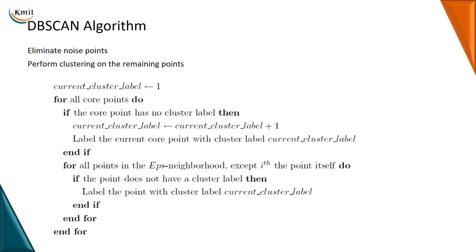For ending up this session, you can go through the DB scan algorithm. What it does is eliminate the noise points and then perform clustering on the remaining points. If the current cluster label is one, then for all core points, do the following — this is how to find the DB scan using the epsilon neighborhood to get the core points. With this we will be closing this session. Thank you.